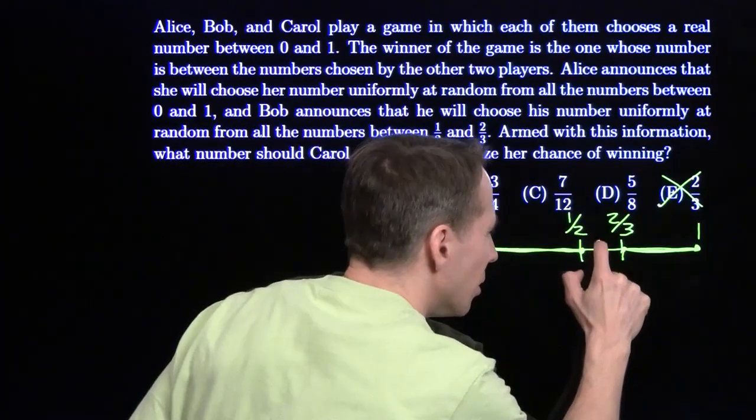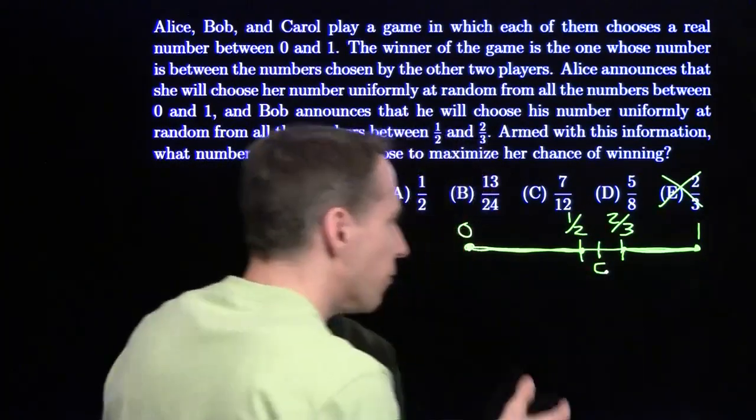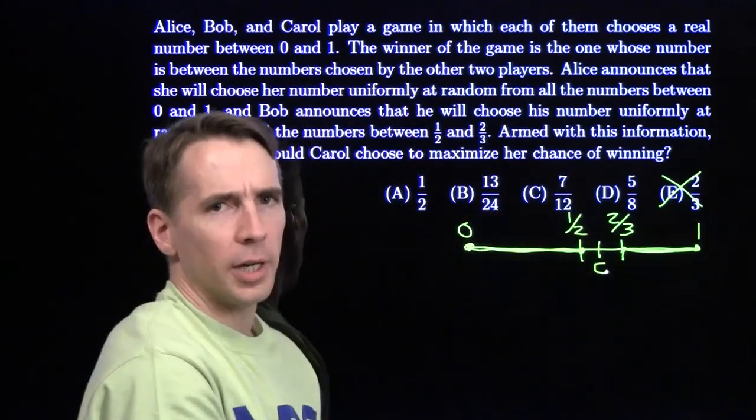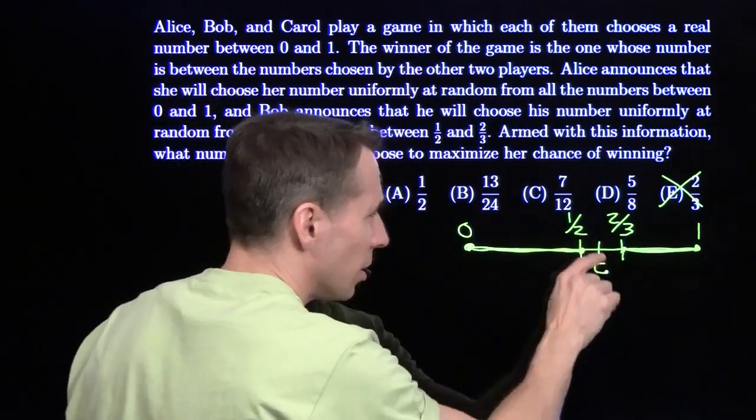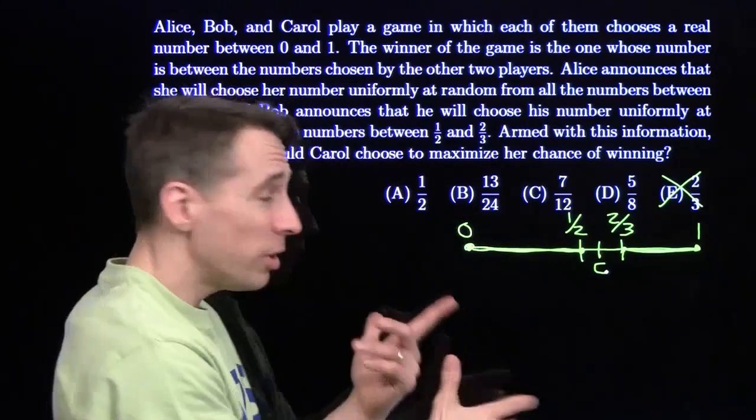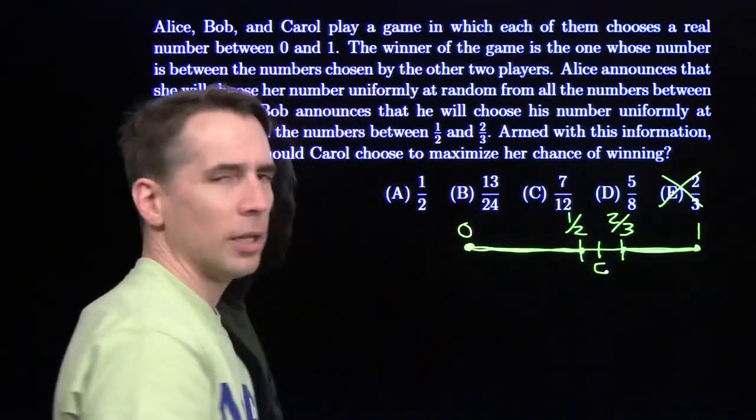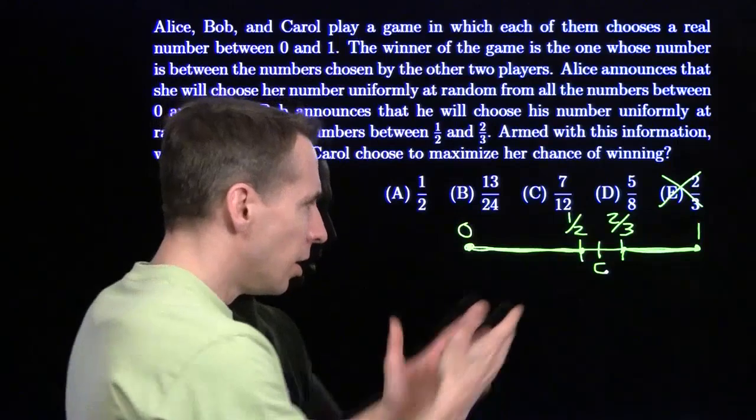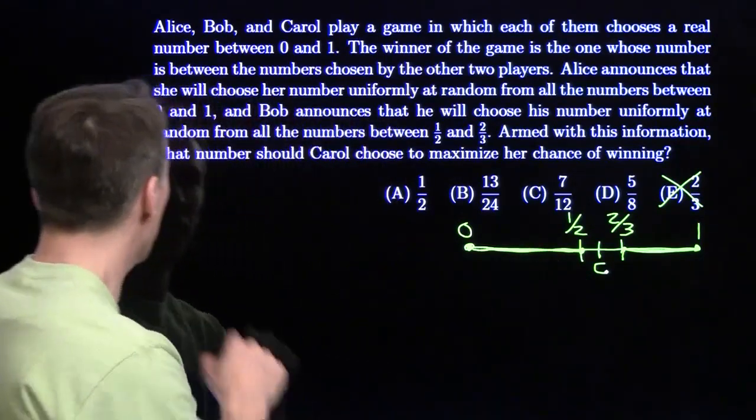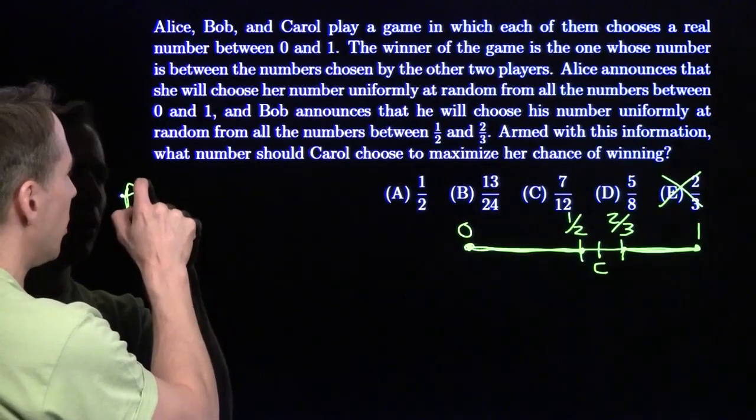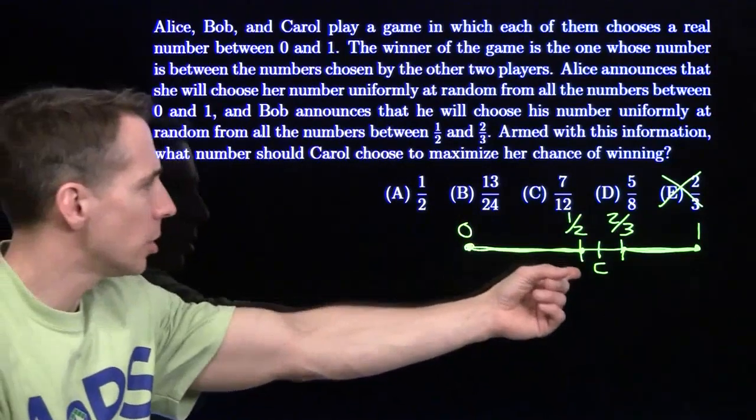What if Carol chooses inside this interval, inside the same interval that Bob's choosing from? She could win if Bob chooses on the left and Alice chooses on the right, or the other way around. We're going to write an expression for the probability that she wins given that she chooses this point C. We're going to get an expression for the probability P in terms of C.